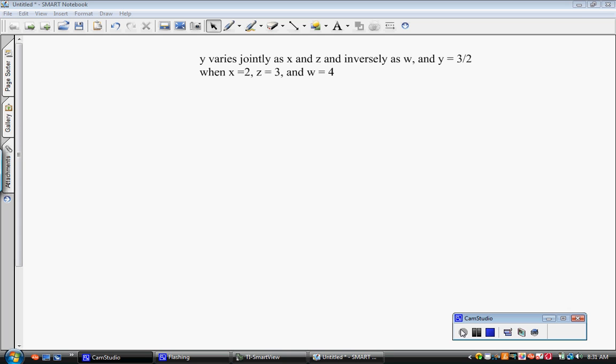Now when something says it varies jointly, that means that it's varying directly with two different things or three different things or four different things. So here we say that y varies jointly as x and z. That means it's varying directly with x and z.